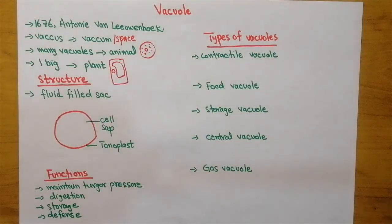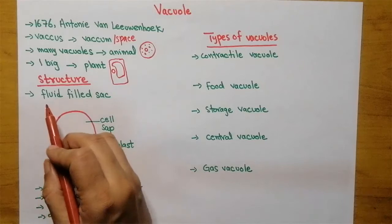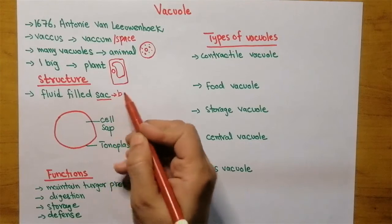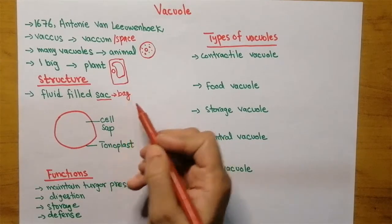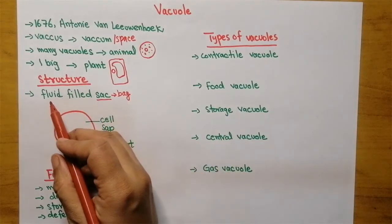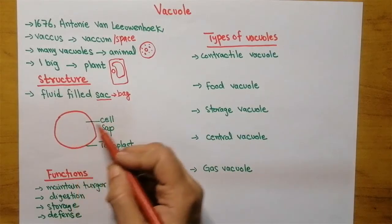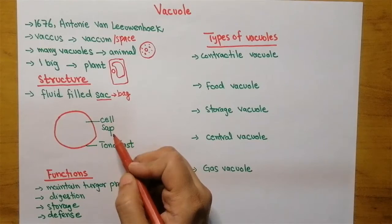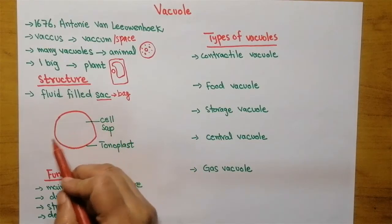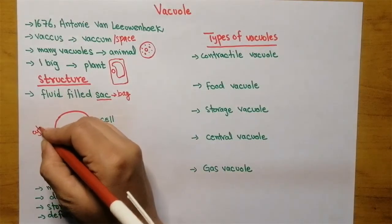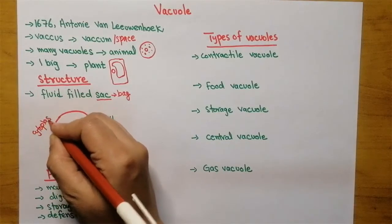If we talk about the structure of vacuole, vacuole is actually a fluid-filled sac or bag which is filled with fluid. The fluid actually present in the vacuole is known as cell sap.